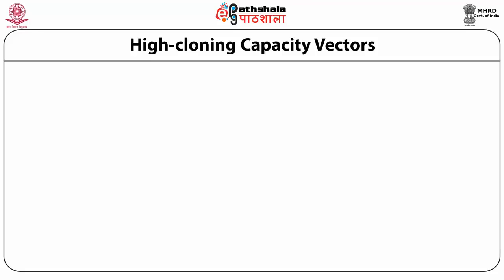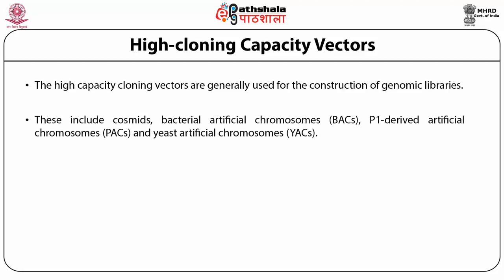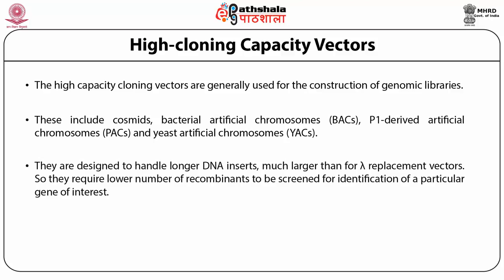High cloning capacity vectors are generally used for the construction of genomic libraries. These include cosmids, bacterial artificial chromosomes, P1-derived artificial chromosomes, and yeast artificial chromosomes. They are designed to handle larger DNA inserts, much larger than lambda replacement vectors. So they require a low number of recombinant cells to be screened for identification of a particular gene insert.